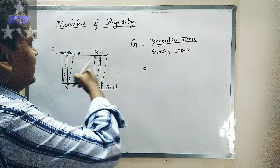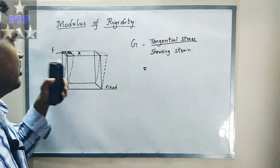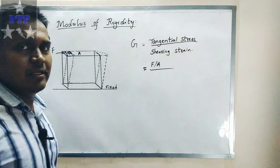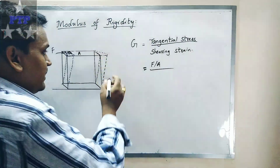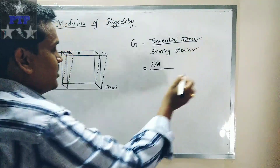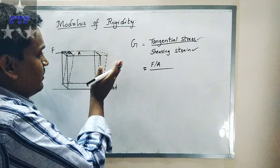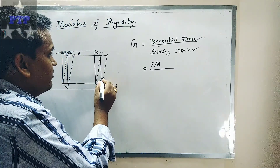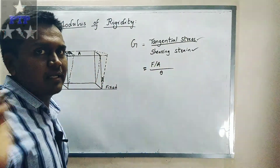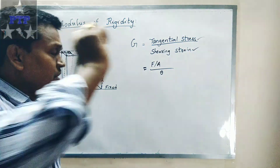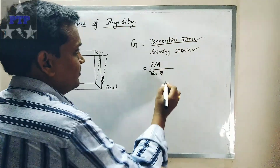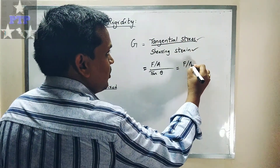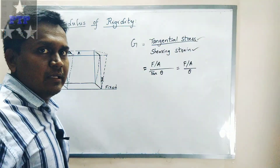The stress acting on the block is force upon area (F/A). For the shearing strain: due to the application of stress, the block changes its angle. The block or iron beam bends by some angle theta. So the modulus of rigidity G = (F/A) / theta. Since the angle theta is very small, we can use tan(theta) ≈ theta.